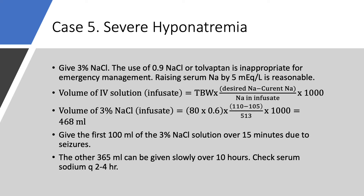We would like to raise serum sodium by 5 because we have an emergency. We use the formula we've used before: volume of IV solution of the infusate of the 3% saline. We determine our desired sodium, which is 110 — that is 5 above 105. Sodium content in 3% saline is 513. Total body water is 80 × 0.6 for a man, multiplied by 1,000. The answer is 468 milliliters.